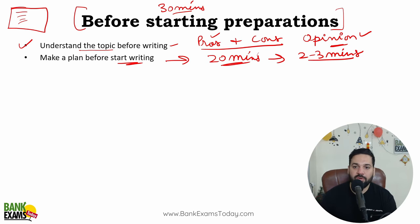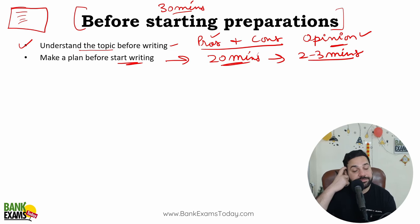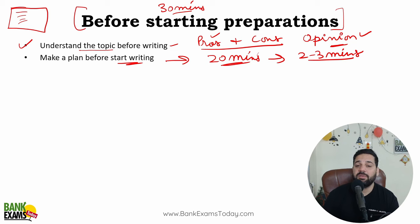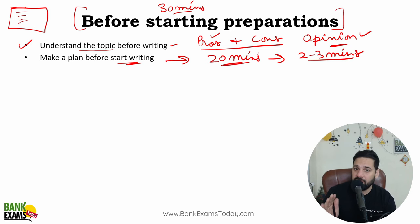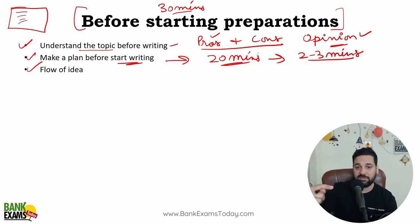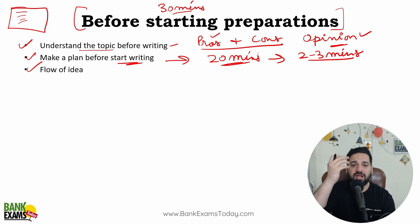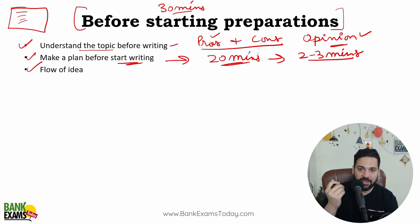Your plan should be completely clear — 4 to 5 pointers noted down on paper. Stick to your plan. If you write without a plan, you won't be able to complete the word limit; you'll keep writing all the pros and forget the cons, forget your opinion, forget the conclusion. There should be a proper flow of ideas: Introduction, Pros, Cons, Conclusion — in that order.